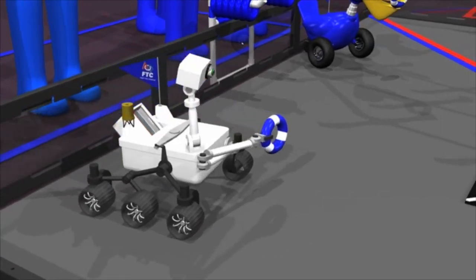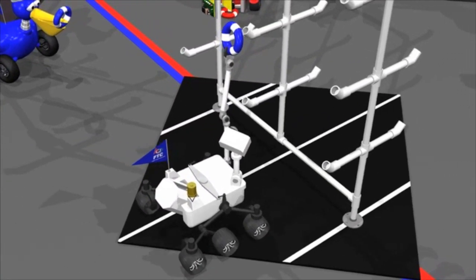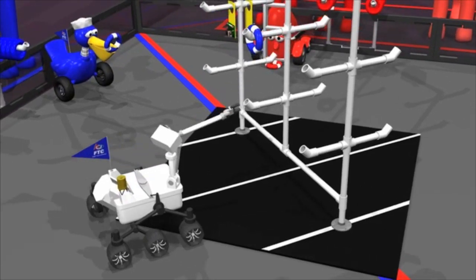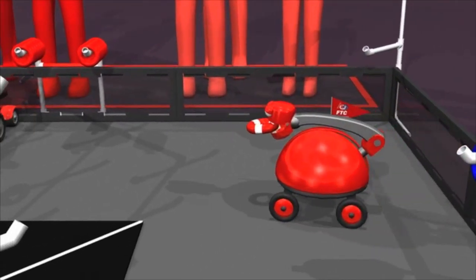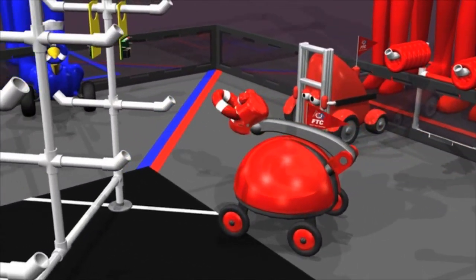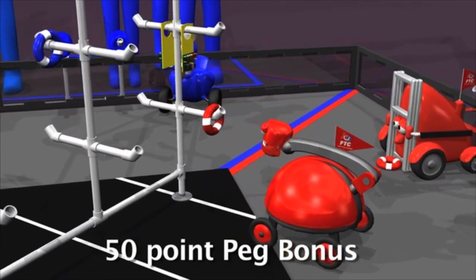If a robot hangs an autonomous ring on a peg, their alliance owns that peg for the entire match. If a robot hangs an autonomous ring on a column with an IR beacon, their alliance is also awarded a 50-point peg score bonus.